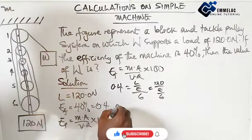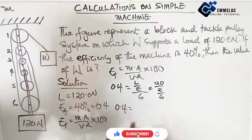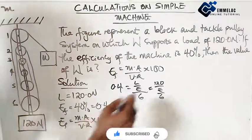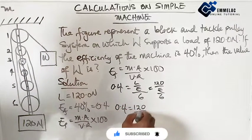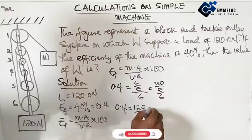Here we have 0.4. So here we have 0.4 equals, this will now be 120 over the effort divided by 6.